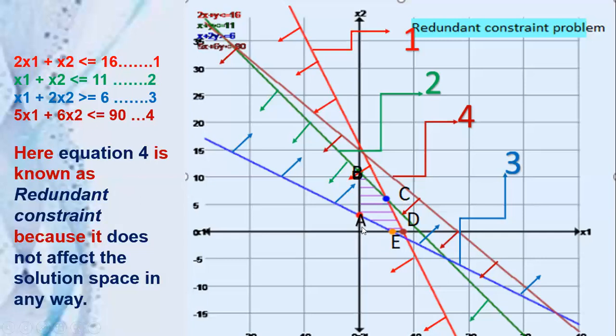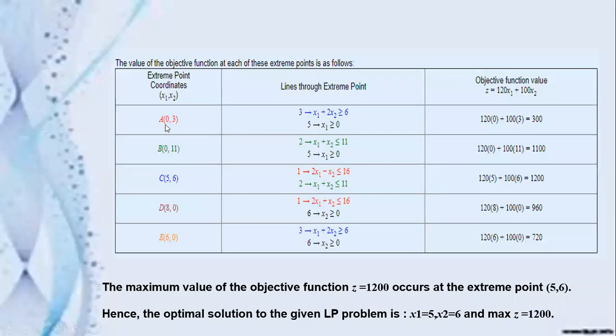Get the coordinates of all these points A, B, C, D, E and substitute. I have got point A as (0,3), B as (0,11), C as (5,6), D as (8,0), and E as (6,0). The first value is x1 and the second value is x2. These are the coordinates of the feasible region points.